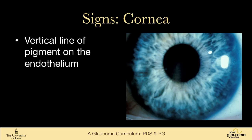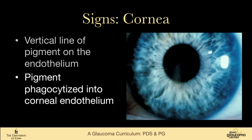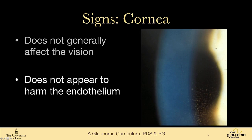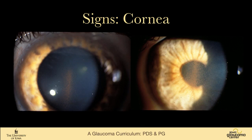What we see on the cornea is a vertical line of pigment on the endothelium called a Krukenberg spindle. The warm aqueous comes through the pupil, hits the cold cornea, and then falls, depositing pigment as it does. This pigment is phagocytized into the corneal endothelium. Generally it does not affect vision and doesn't seem to harm the endothelium. Here are some more striking Krukenberg spindles — this patient has a tremendous amount of pigment on the corneal endothelium, yet had 20/40 vision.